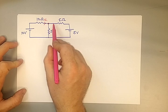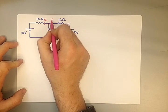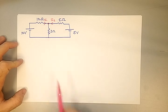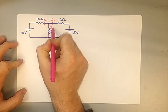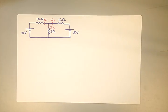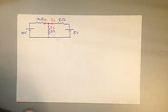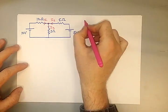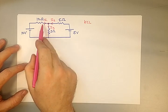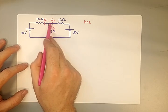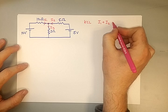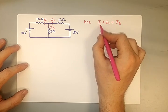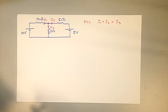The second voltage source generates a current traveling through the five ohm resistor. They meet at a node, and flowing out of the node is our third current. Kirchhoff's current law: I1 plus I2 equals I3 — what flows in equals what flows out.